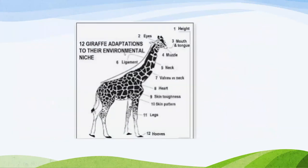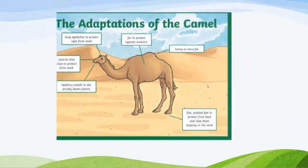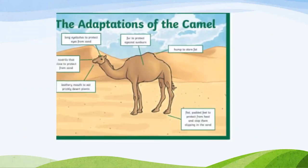You can see the giraffe's adaptation — its neck is so long so that it can reach high up to eat leaves. You can see how different types of adaptations work. The hoopoe bird walks in grassy areas without falling down. You can ask children to draw and learn all the types of adaptation.